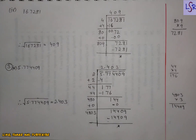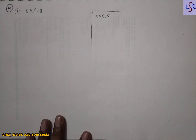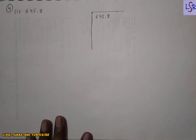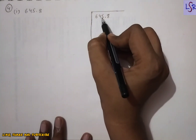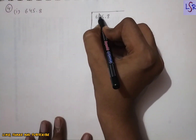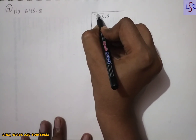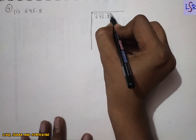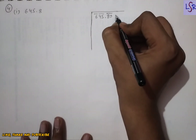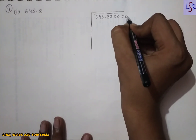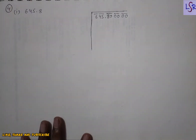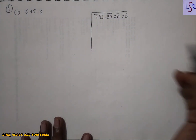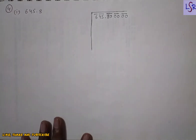The next question asks us to find the square root of given numbers correct to 2 decimal places. We need to find up to 3 decimal places and then round off to 2. For pairing: before the decimal we pair from the back, and after the decimal we pair going forward, adding zeros as needed — two zeros for the second pair and two more for the third pair. We can add as many zeros as required after the decimal. We start: 2×2=4, leaving remainder 2.